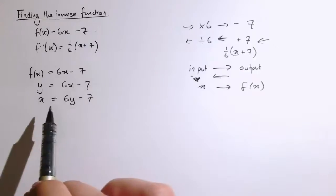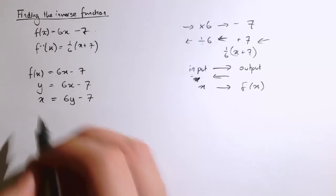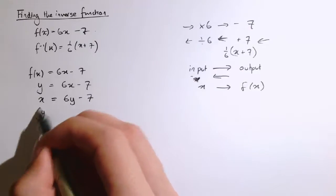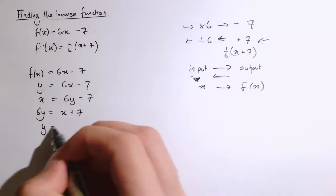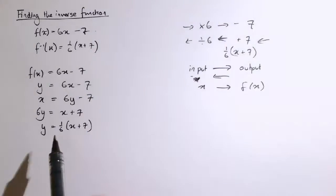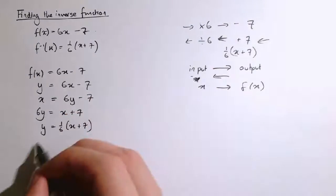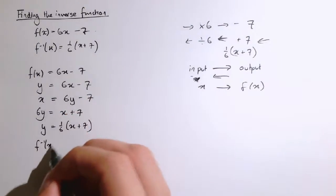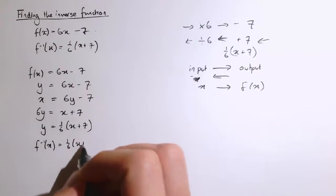And what I've got to do is then rearrange this to make y the subject. So we've got 6y equals x plus 7 and y equals 1 sixth x plus 7. And that gets us exactly to where we were before,